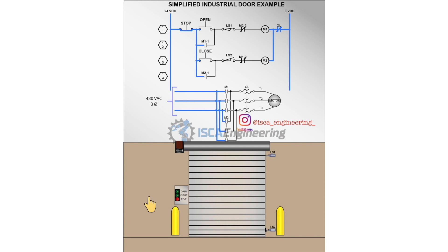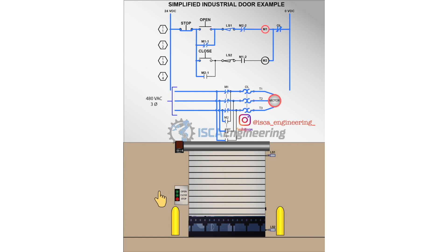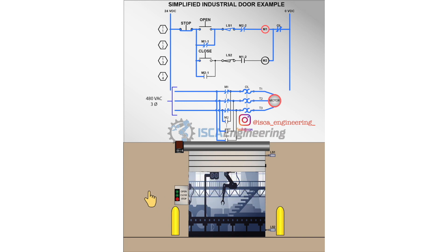Whenever the door is closed and limit switch 2 is actuated, then pressing the close button will have no effect on the door. To raise the door, you would press the open button to energize motor starter 1 and therefore turn the motor on. Whenever the door has reached its limit and actuated limit switch 1, then the limit switch's contacts will switch states and stop the flow of current to the motor.